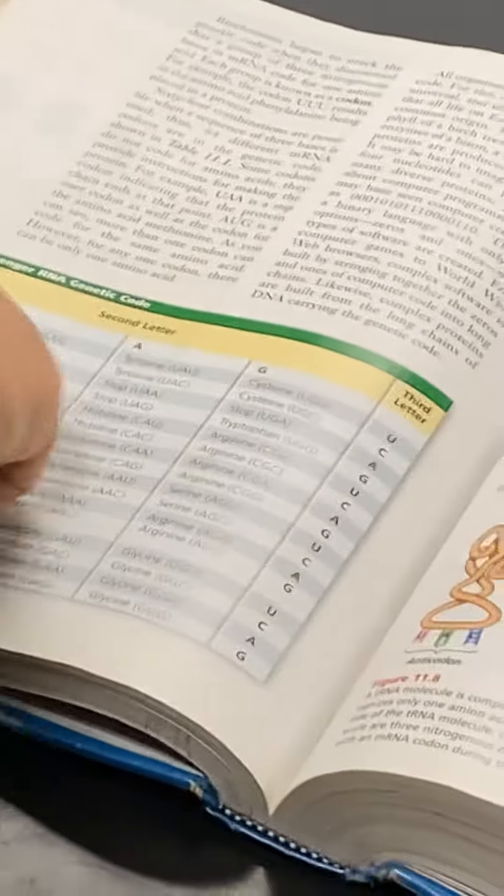You would go to U. Second letter is U. Third letter is U. It meets at PHE or phenylalanine. Understand? Yes.